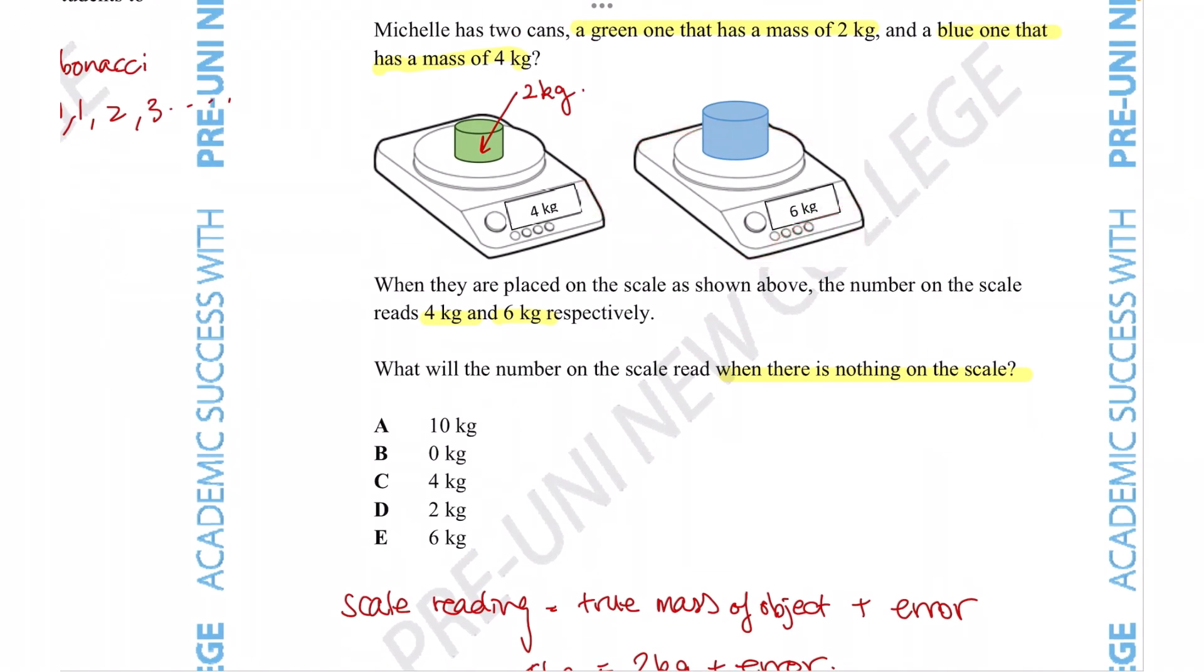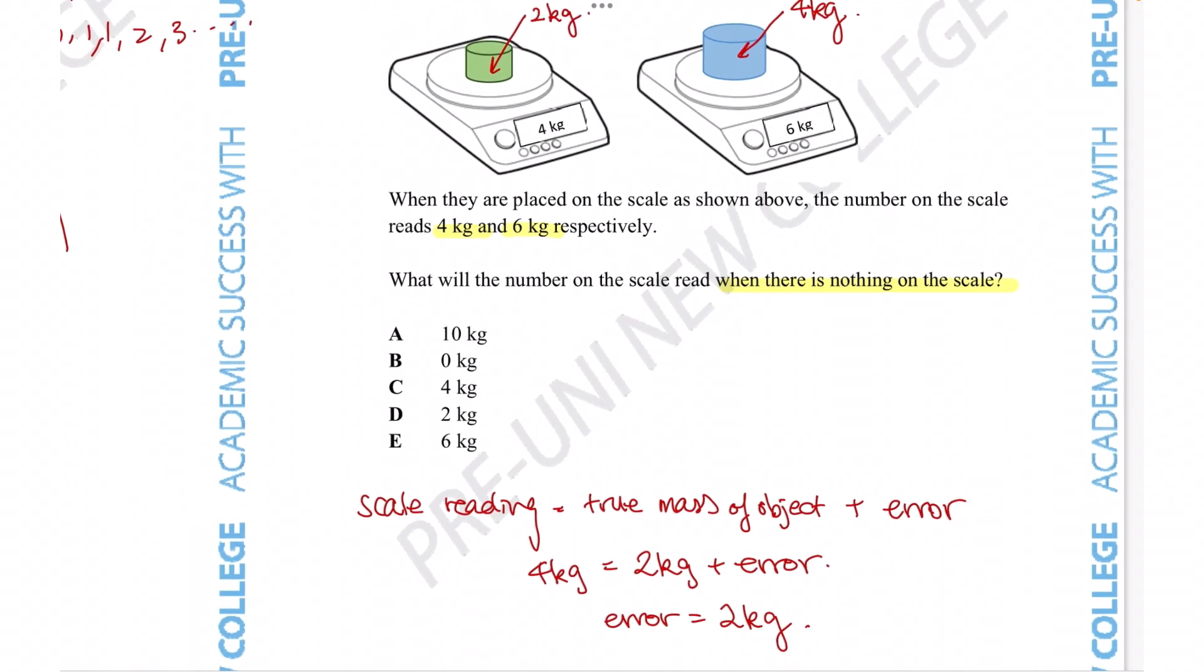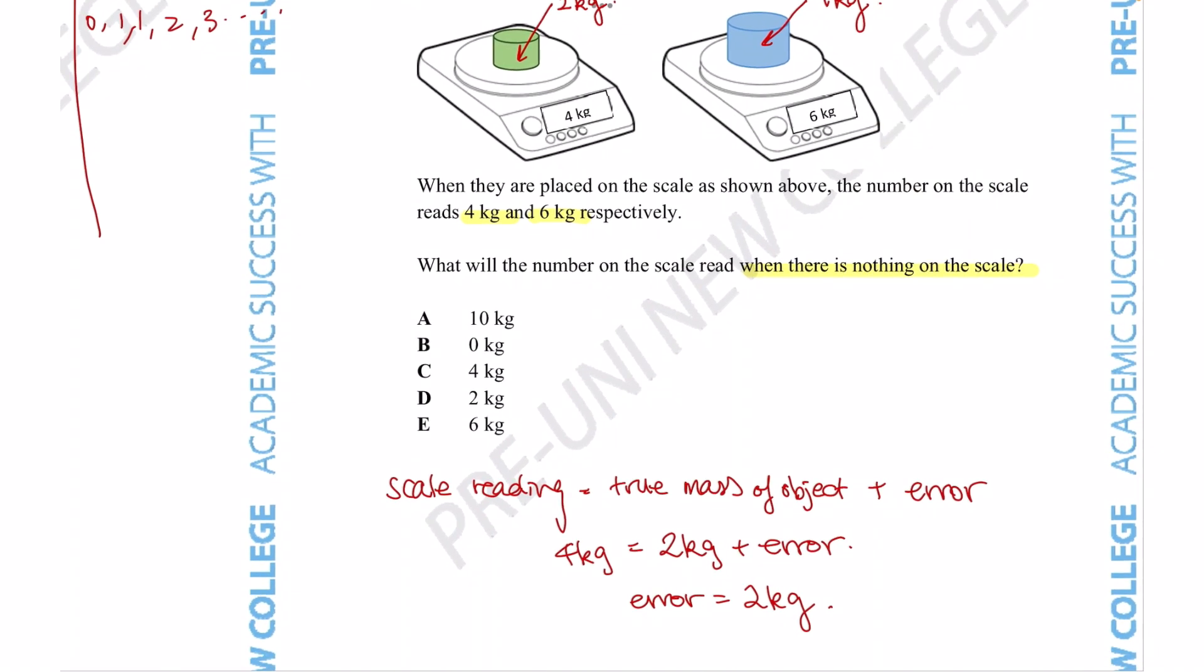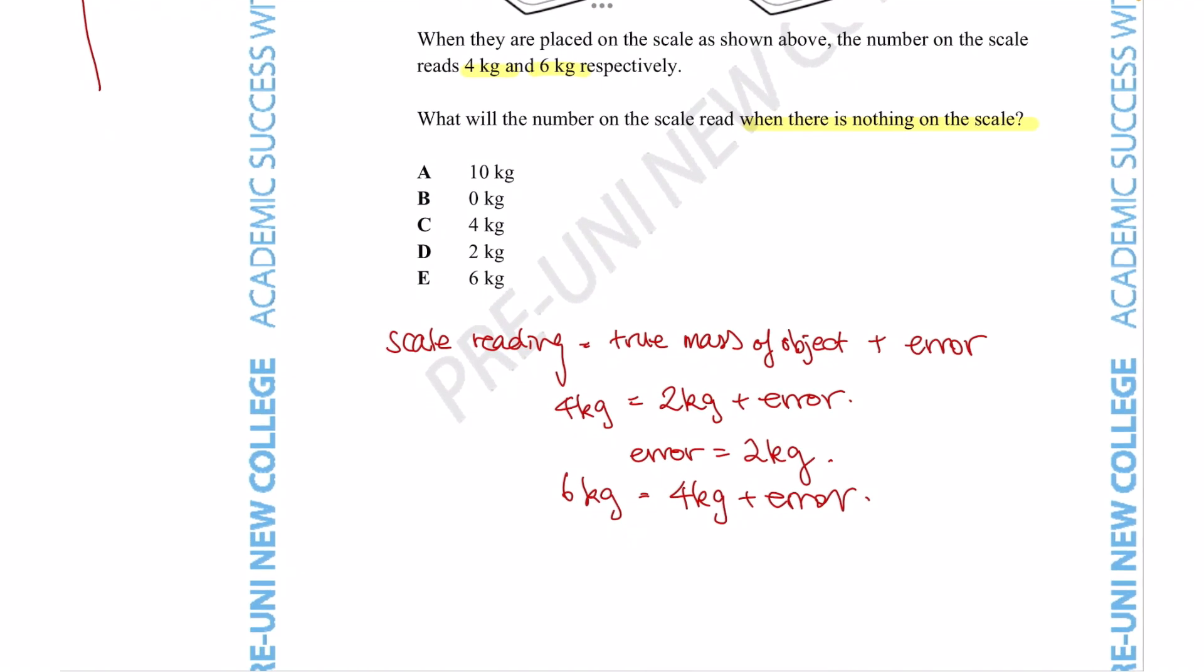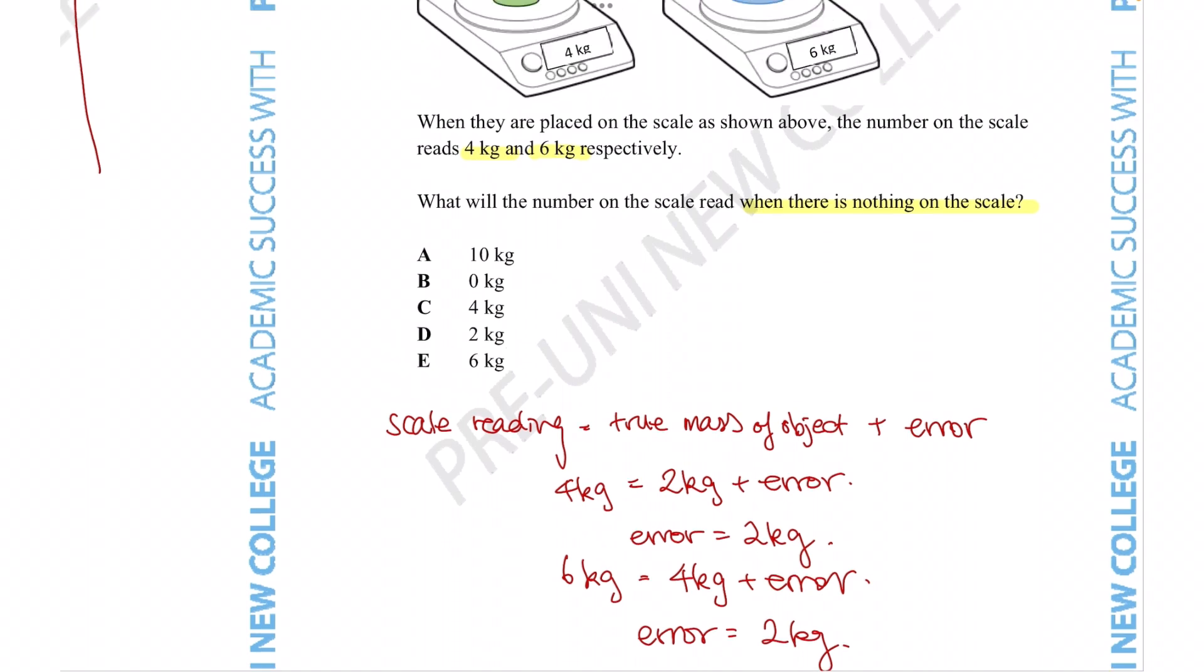In this case we are told this blue mass has a mass of 4 kg, so then our number sentence would say the reading is 6 kg, the true mass is 4 kg, and we have the error that is causing the reading to be slightly different. We again can see that the error maintains the same to be 2 kg, so that must be the amount that is off every single time.